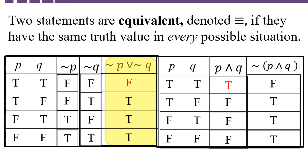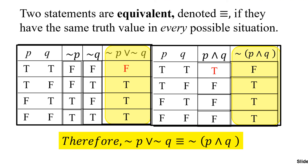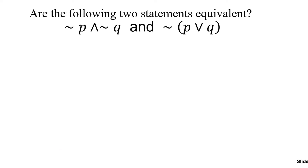And now we compare the last column from the truth table on the left to the last column from the truth table on the right, and you see they have exactly the same truth values. So that tells us that these statements are logically equivalent. Negation of P or negation Q is equivalent to the negation of parentheses P and Q.